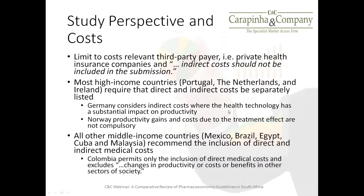Germany, for example, considers indirect costs where the health technology has a substantial impact on productivity. All high-income country guidelines acknowledge that the level of technology being introduced is such that, although the price may be high, the economic benefits delivered by newer technologies are justified by both the direct costs that are reduced or averted, and the indirect costs that are minimized or maximized. In Norway, productivity gains and costs due to treatment effect are not compulsory but are recommended based on the methodology.